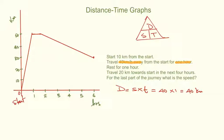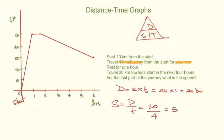So that should do us nicely, and that's what that graph looks like. Last of all, the speed for the last part of the journey — speed is distance over time. The distance traveled in that last part is 20 kilometers, and we did it in four hours. So we're going very, very slow — five kilometers per hour. And that's the end of this second and probably final video on distance-time graphs. I hope it was straightforward and you were able to understand it. Feel free to like and subscribe.